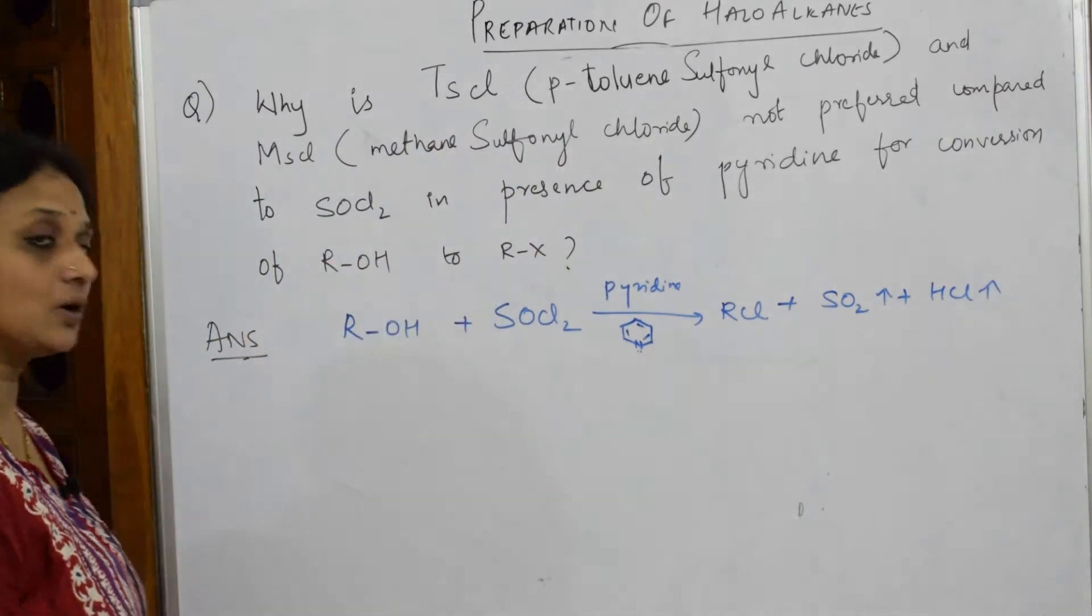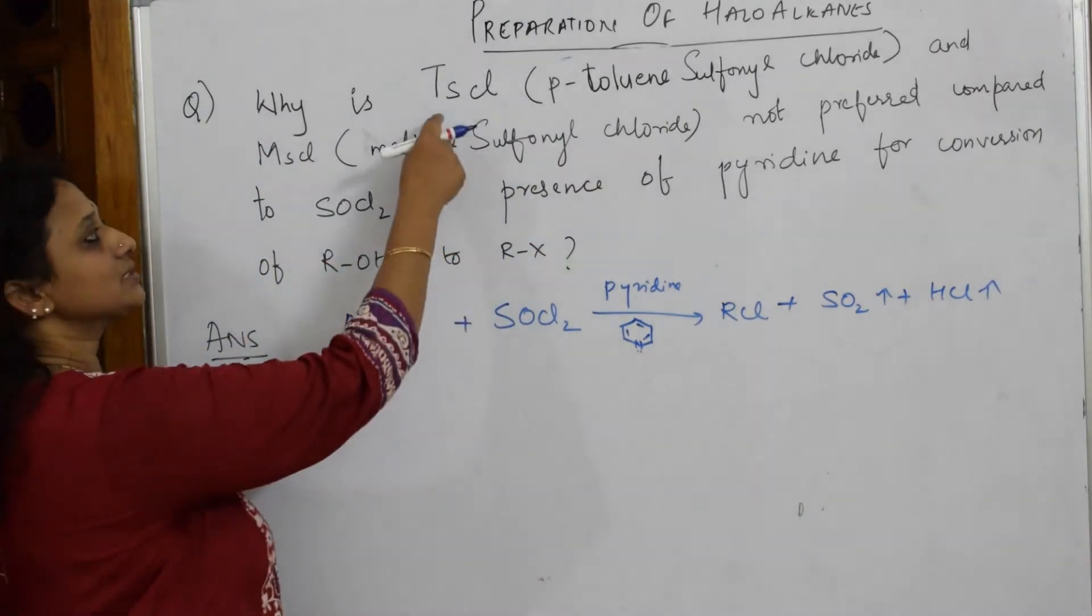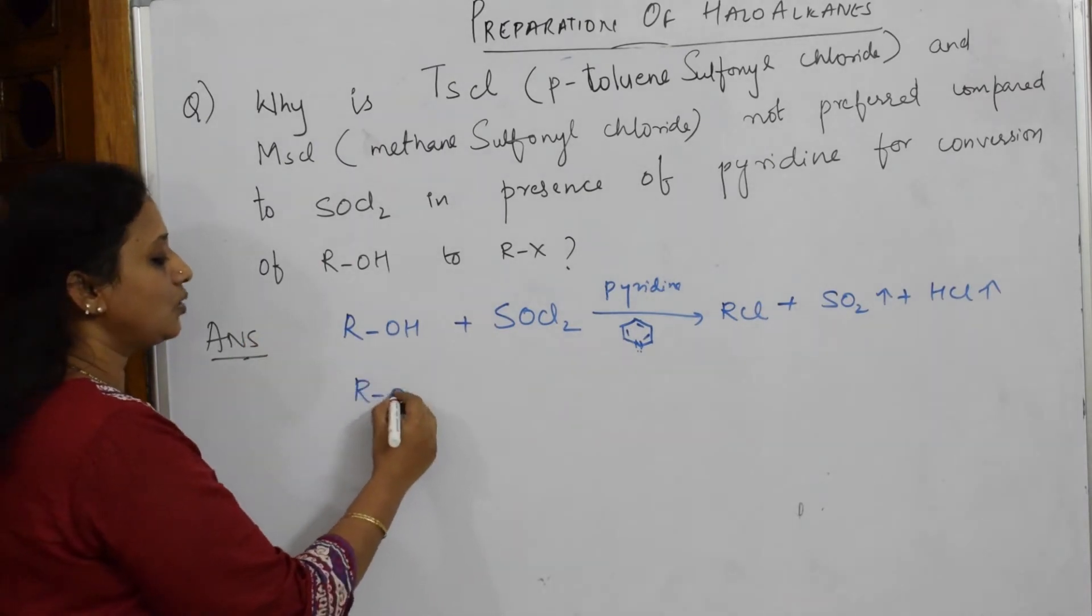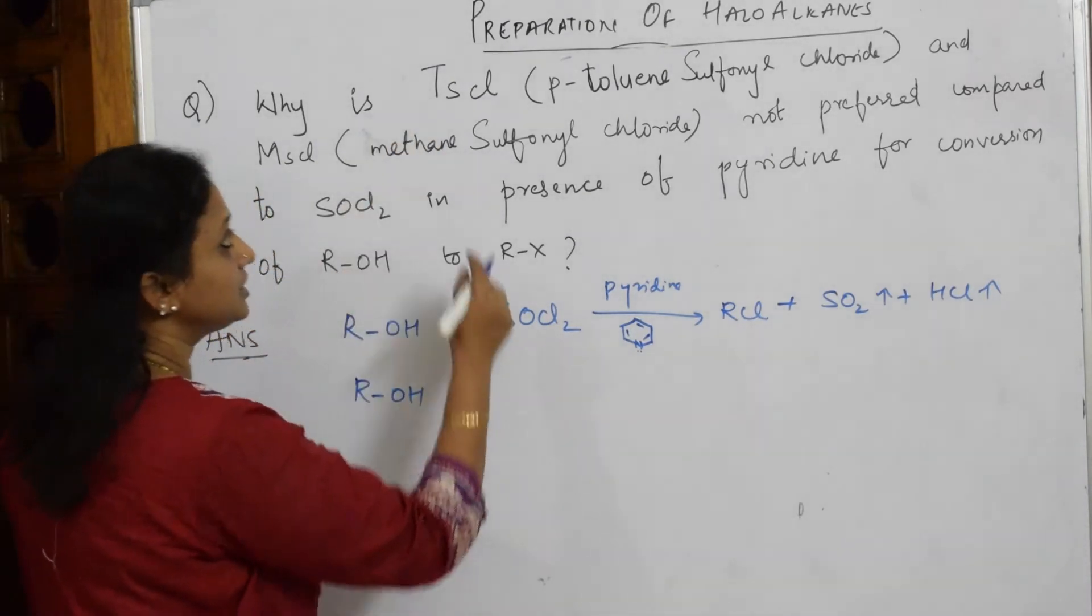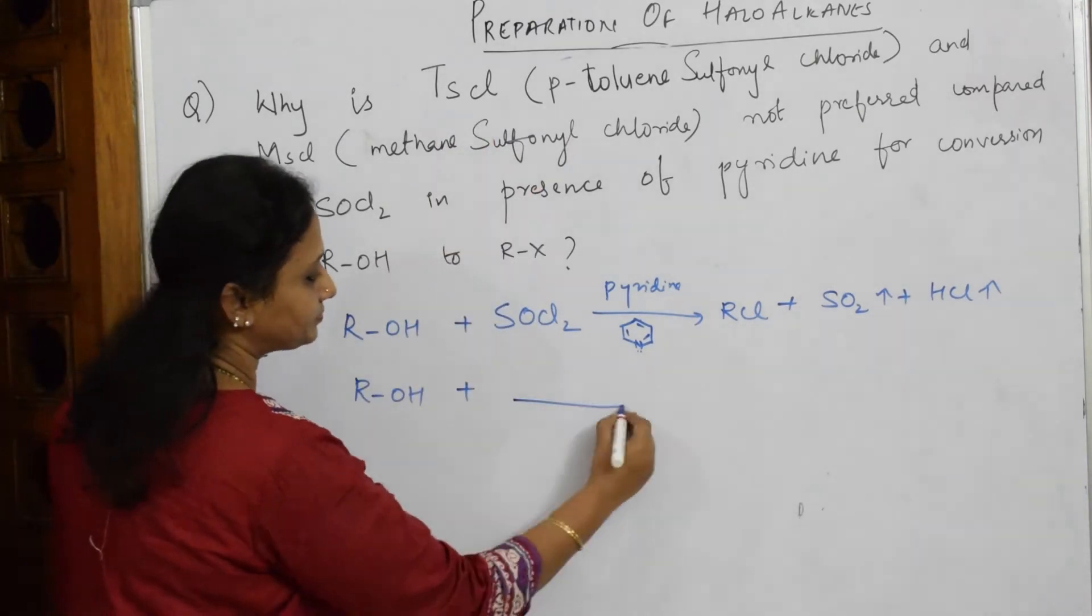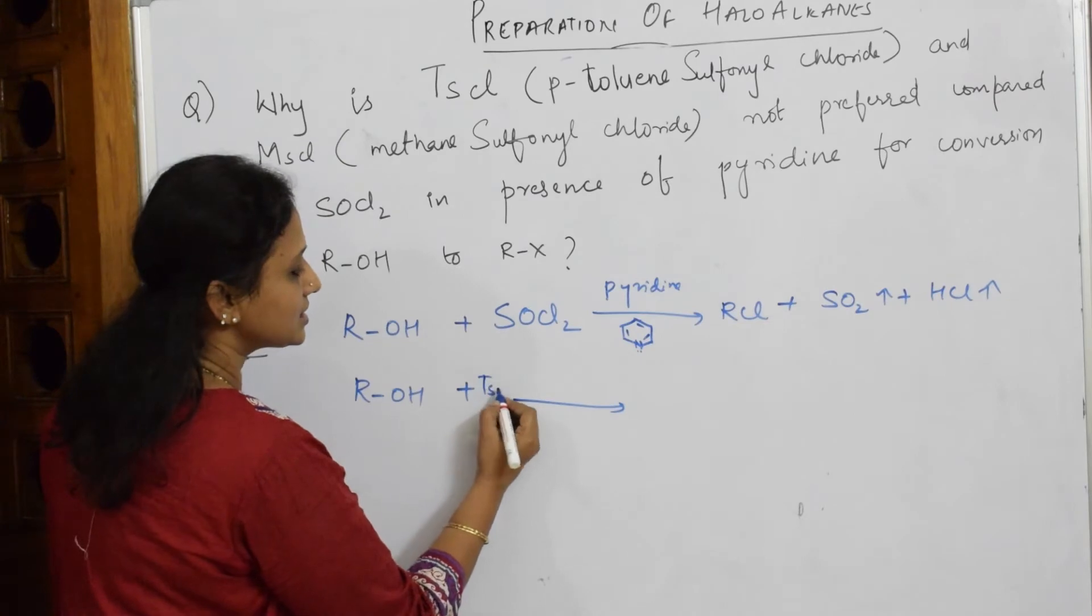But now, question is, what happens if I use this or this in the reaction? Let's see what is going to happen. ROH, if I take, instead of SOCl2, I am going to use TSCl.